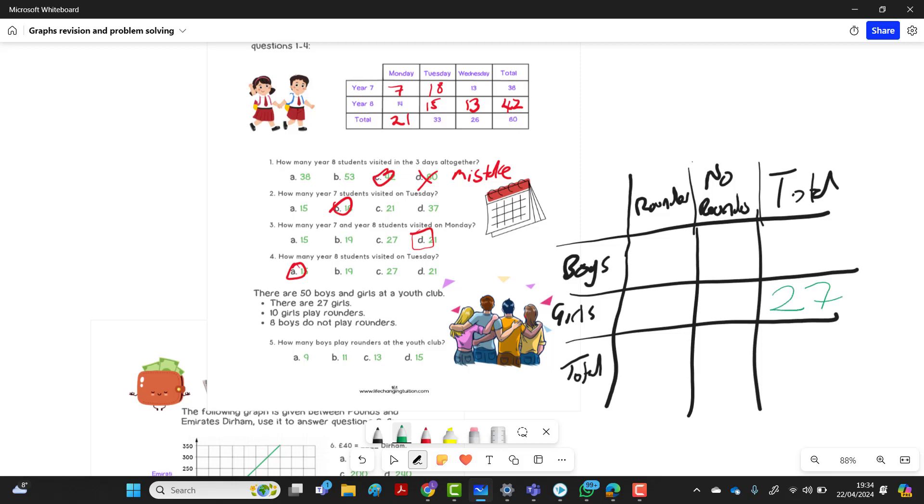So we need boys, girls, rounders, and not play rounders. So we probably need another line here. Okay, so what have we got here? Boys, girls, and rounders here, and no rounders. And a total here. Okay, let's fill in the values. We need the ones in green, the ones we've given. So 27 girls in total, so that's 27 there. 10 play rounders. So 10 girls play rounders, so that'll be 10 here. And 8 boys don't play rounders. So no more 8 boys there. And a total is 50.